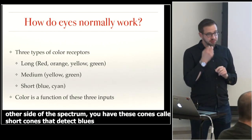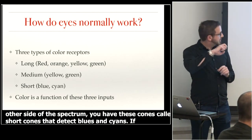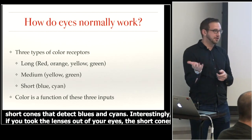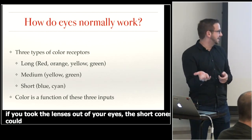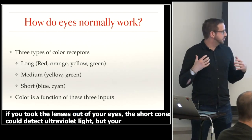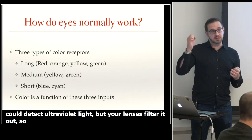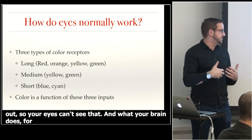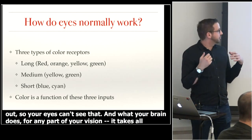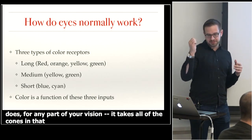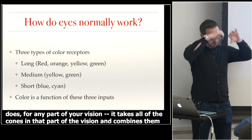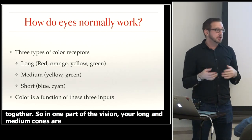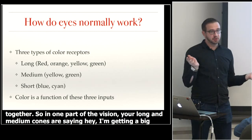Interestingly, if you took the lenses out of your eyes, the short cones could actually detect ultraviolet light, but your lenses filter it out. Basically what your brain does — for any part of your vision — it takes all the inputs from the cones in that region and combines them together. So if your long and medium cones are going off the chart and your short cones see nothing, your brain says: this is yellow or yellowish.